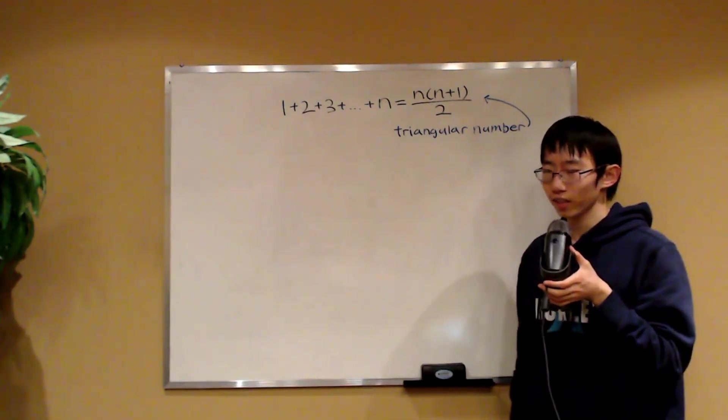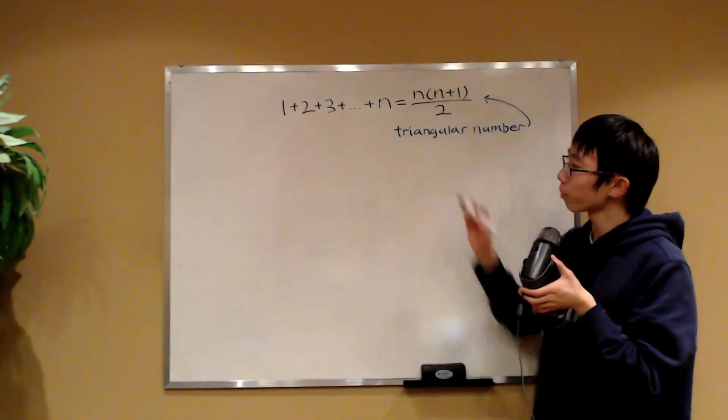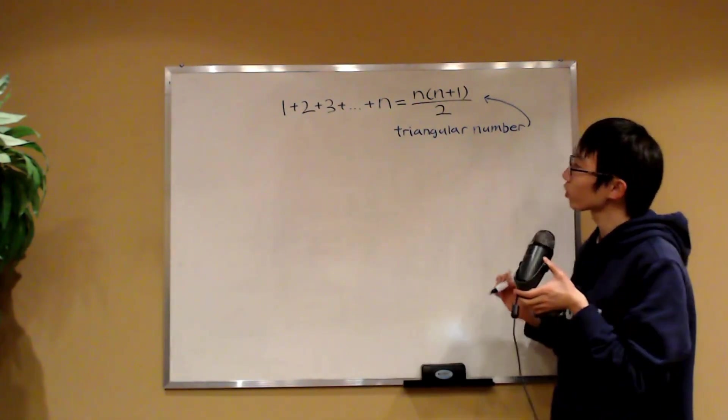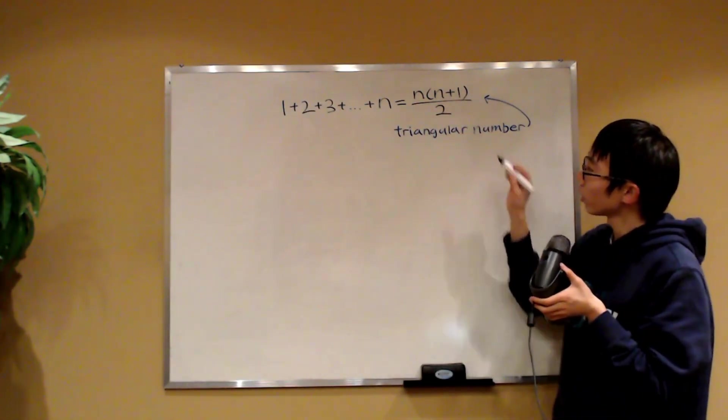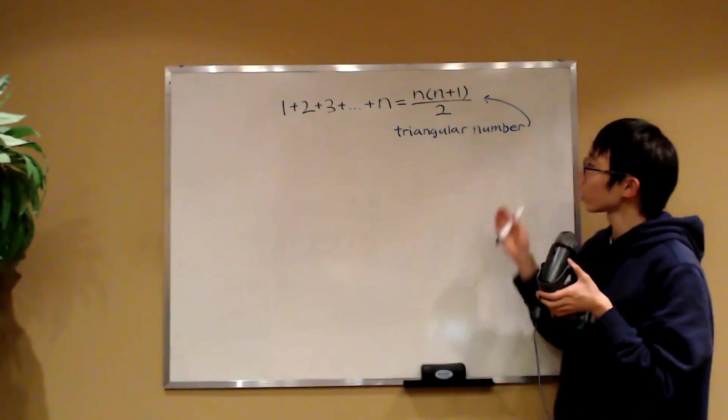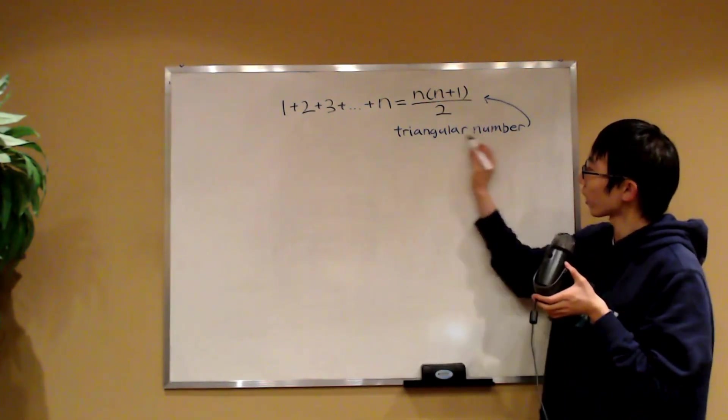You might be familiar with the fact that the sum of the first n positive integers is equal to n times n plus 1 divided by 2, and such a number would be called a triangular number.